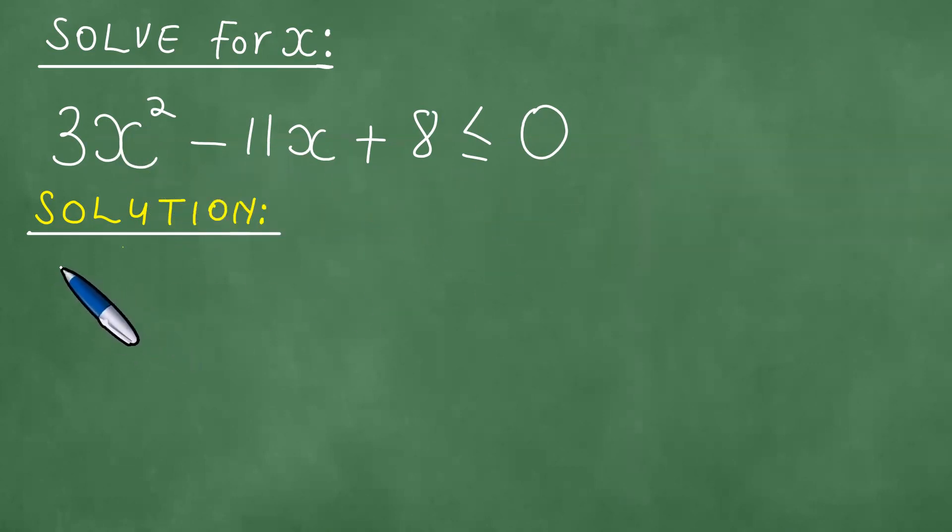Now what we do is we have 3x squared minus 11x plus 8 is less than or equal to 0. 3x squared by 8, or 3x squared times 8, is 24x squared. We look for two numbers whose product is 24x squared but whose sum is minus 11x, and those are minus 3x and minus 8x plus 8, less than or equal to 0.